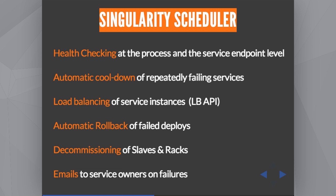You can go inside each instance and look at any file and all the log files. The scheduler supports very configurable health checking — you can specify how much time Singularity should wait before starting health checks, how long it waits for each instance to become healthy and for the whole deploy to become healthy. If everything is healthy, you can ask Singularity to call the load balancer API and add your instances to the load balancer. Everything is automated: if something dies, Singularity removes it from the load balancer; if something comes up, it gets added. We also roll back everything automatically if something goes wrong — if you deploy and something fails, Singularity moves back to the previous successful deploy automatically.